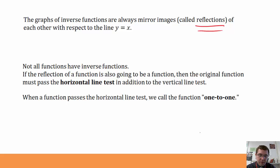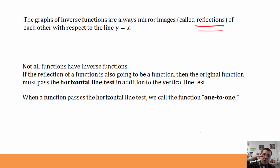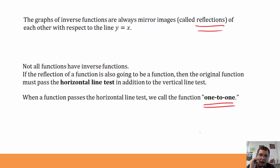Not all functions have inverse functions. If the reflection of a function is going to be a function, then the original function must pass the horizontal line test, in addition to the vertical line test it must pass to be a function in the first place. A function passes the vertical line test if every vertical line crosses the graph only once. The horizontal line test tells us whether a function will have an inverse: if every horizontal line crosses the graph only once, the function passes the horizontal line test, we call it one-to-one, and it has an inverse function — because we need its reflection over y equals x to also be a function.